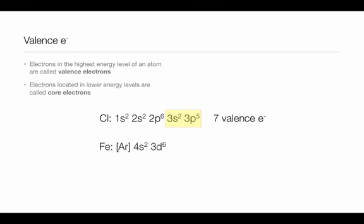In iron, this time around, we have the highest energy level being represented by the fourth energy level. Even though it's in the middle of the d block, we still have the highest energy level being represented as the fourth, and it only has two valence electrons because the two electrons in the fourth energy level.